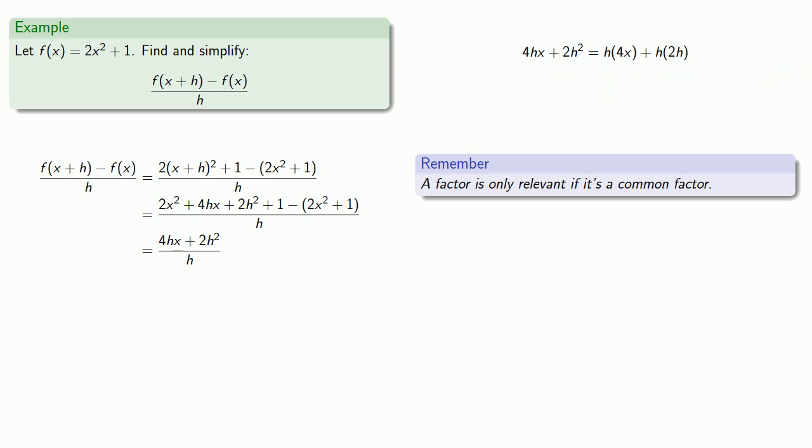And having moved the common factor, I can now remove that common factor, h(4x + 2h). Equals means replaceable, so our numerator can be replaced with h(4x + 2h).